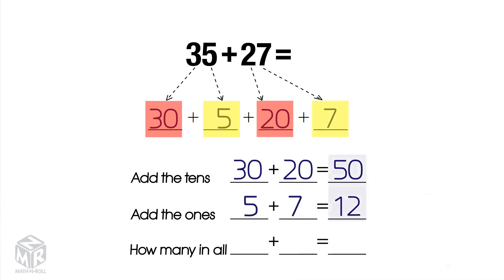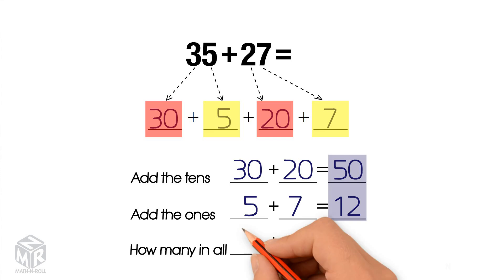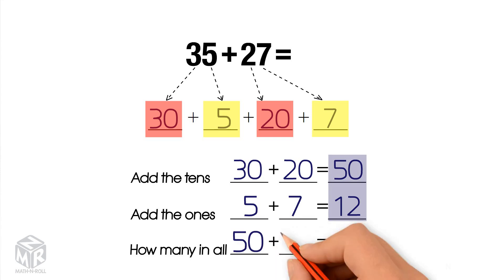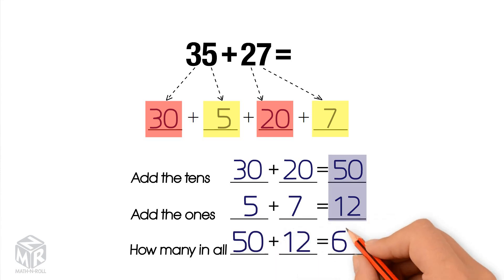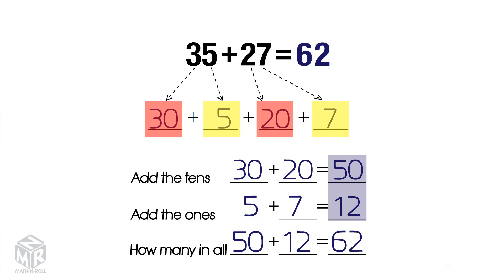Now we add them together: 50 plus 12 equals 62. So 35 plus 27 equals 62.